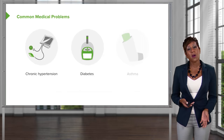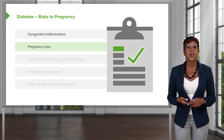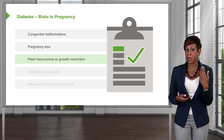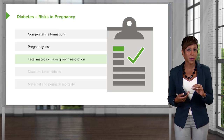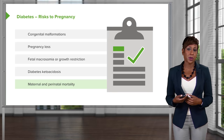Moving on to diabetes — this is another medical problem we often address prior to pregnancy. In general, if patients have diabetes, they have risks to the pregnancy such as congenital malformations (sacral agenesis being the most common), increased risk of pregnancy loss, increased risk of fetal macrosomia (meaning a large baby), or growth restriction because diabetes can affect the vessels going to the placenta. They also have an increased risk of diabetic ketoacidosis, especially if blood sugars are not controlled, and overall this increases maternal as well as perinatal morbidity and mortality.